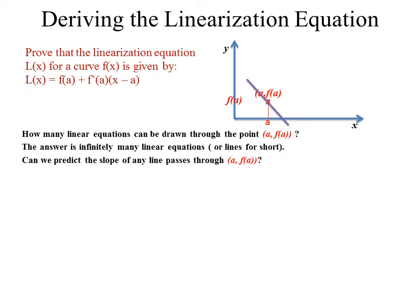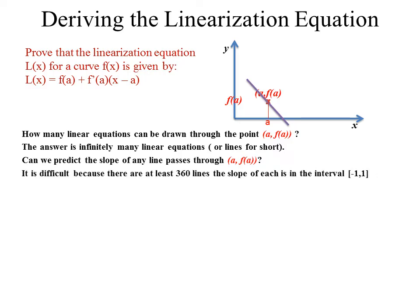Can we predict the slope of any line going through this point? The answer is yes, but with difficulty, because there are at least 360 lines. We say at least 360 because we are considering 360 degrees around the point A comma F of A. If we also consider half a degree or one-tenth of a degree, then the number of lines would be much more than 360.